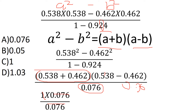So the terms cancel. This is the answer: 0.924 and 0.086 combine. 1.086 minus 1 gives 0.086. The final answer is 1.